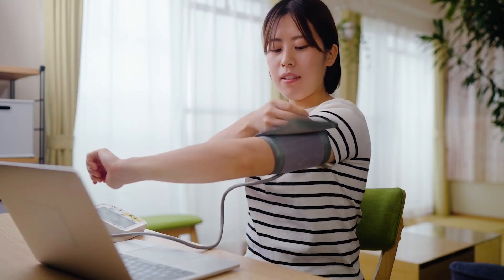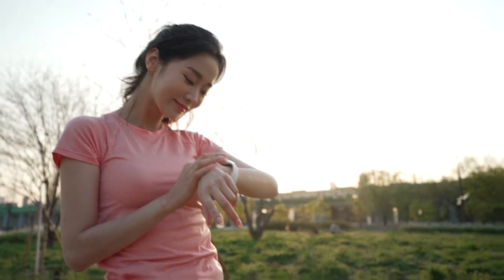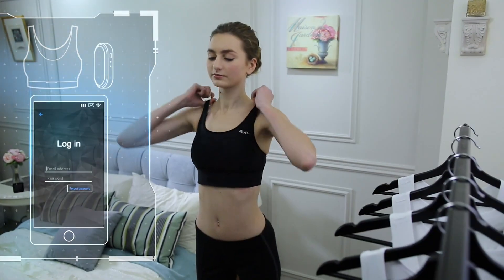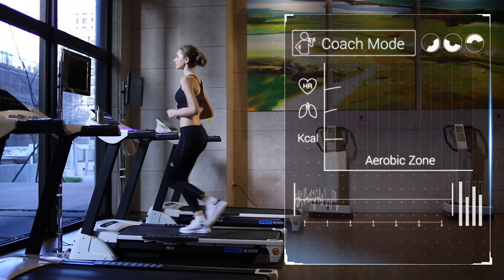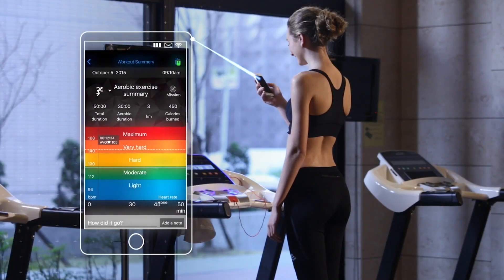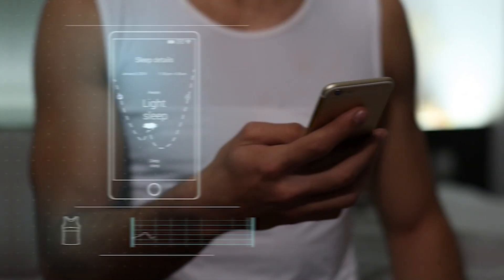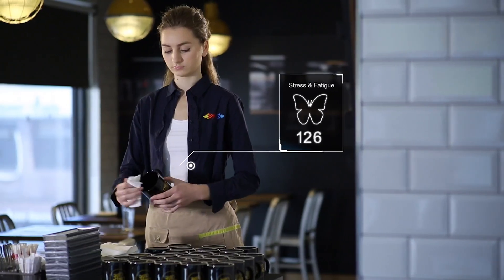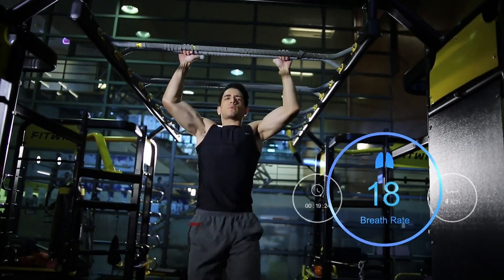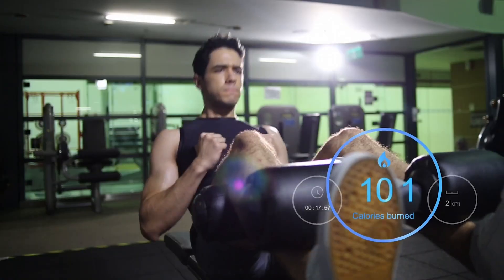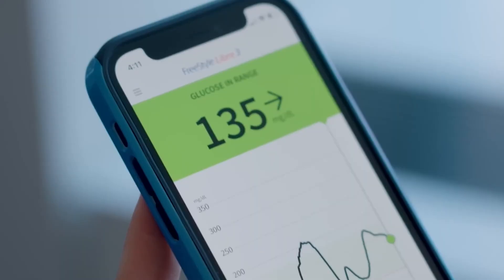These innovations are shifting healthcare from reactive to proactive, allowing individuals to take control of their well-being like never before. Today's smartwatches, fitness trackers, biosensors, and even smart clothing are embedded with powerful medical-grade sensors. They track vital signs, analyze patterns, and detect potential health risks in real time. Heart rate, blood oxygen levels, sleep cycles, stress responses—every heartbeat, every breath, and every movement can now be measured, analyzed, and optimized.